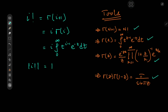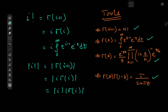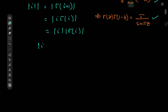The absolute value of i factorial equals the absolute value of gamma(i+1), which equals the absolute value of i times gamma(i), which equals the absolute value of i times the absolute value of gamma(i). Because the absolute value of i is just 1, we have the absolute value of i factorial equal to the absolute value of gamma(i). But what can we extract from this information?